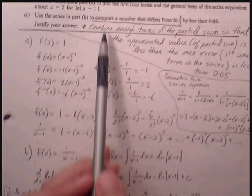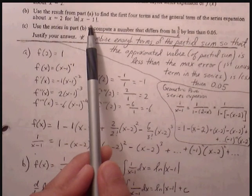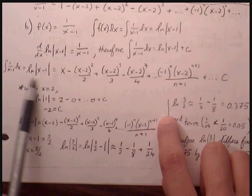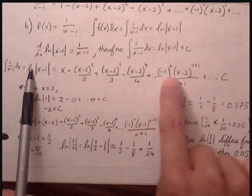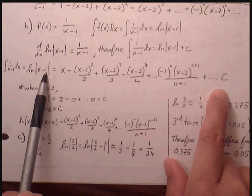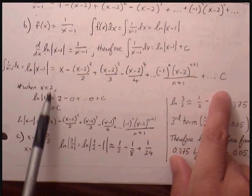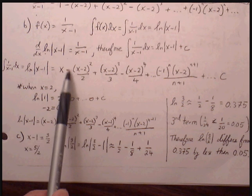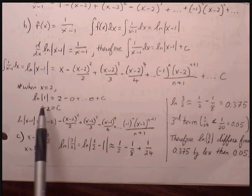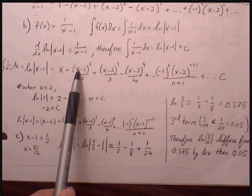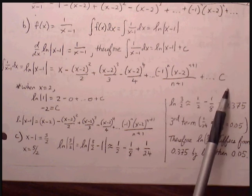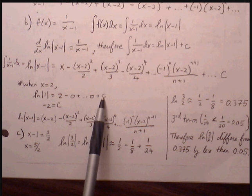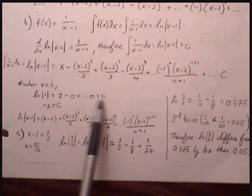We can use the information from Part B to find the value of C. It says about x = 2. We know ln(x-1) equals all these terms plus C. If we replace each x with 2, that allows us to solve for C. Plugging in x = 2: ln(2-1) = ln(1) = 0. After the first term, which is 2, every other term cancels because (x-2) becomes (2-2) = 0. So we get 0 = 2 + C, meaning C = -2.